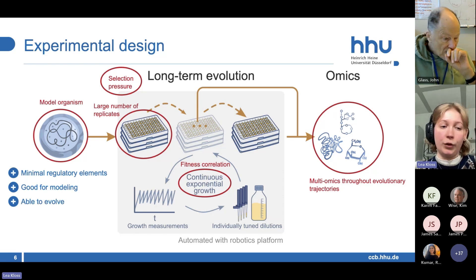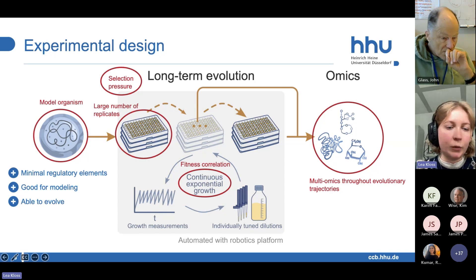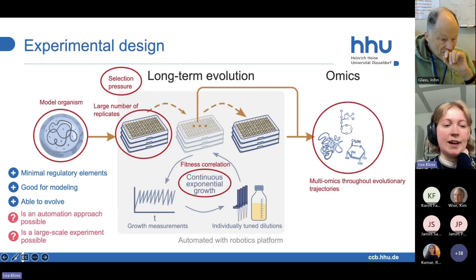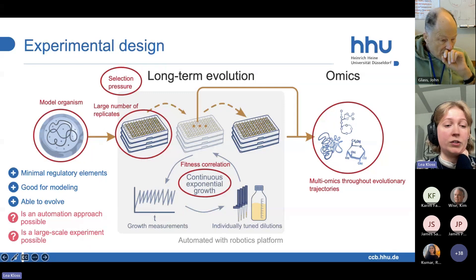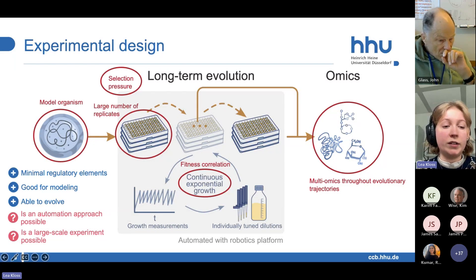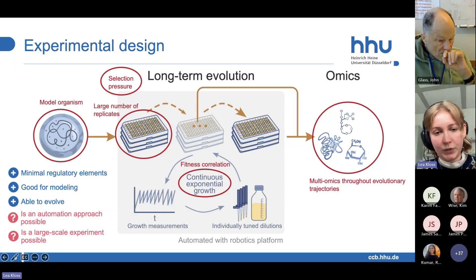The minimal cell has also been shown to evolve, so there have been really nice papers about the minimal cell being evolved in the lab. The main questions I am now focusing on are whether an automation approach is possible and whether a large-scale experiment is possible. These experiments have been performed with E. coli, and one disadvantage is that the minimal cells don't really have a high optical density.